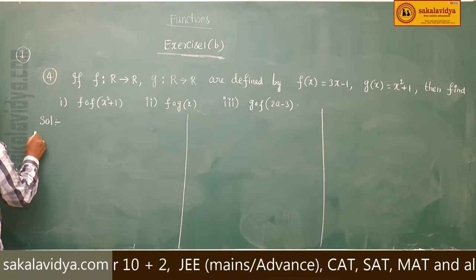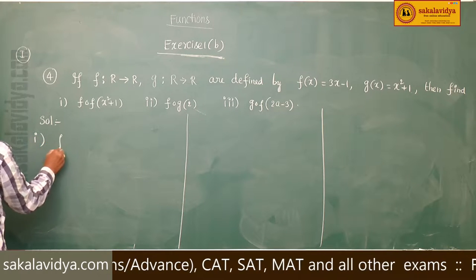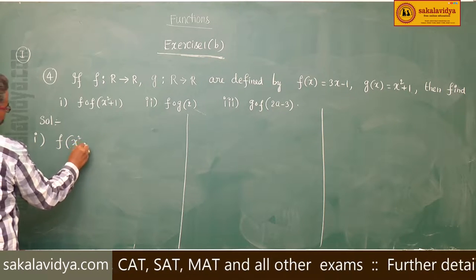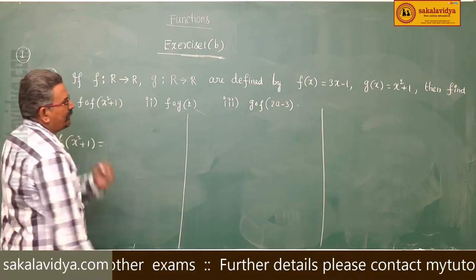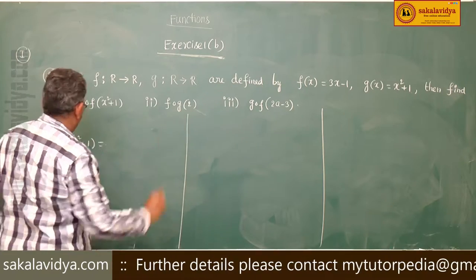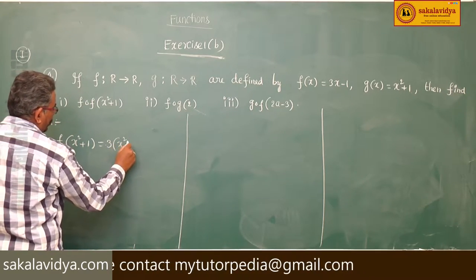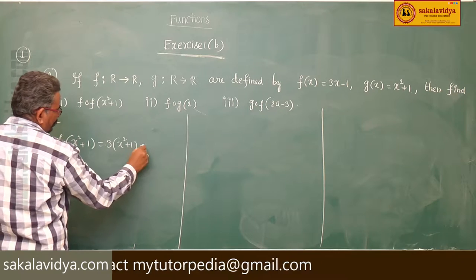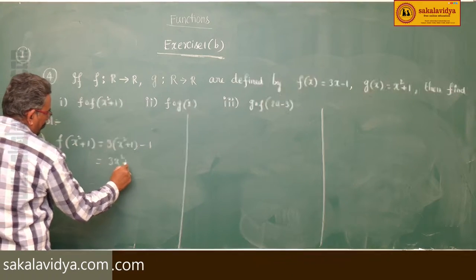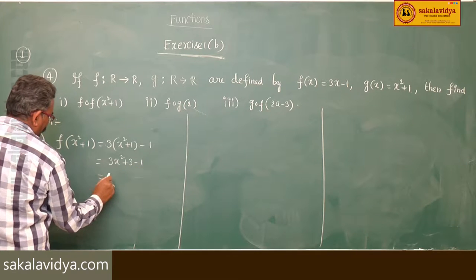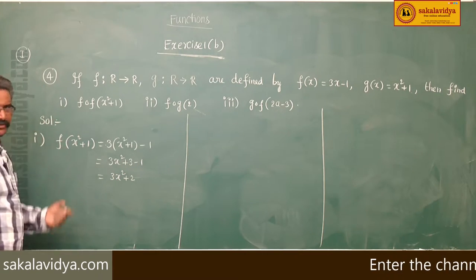First one, let us find F of x squared plus 1. Since F of x is equal to 3x minus 1, this is 3 times (x squared plus 1) minus 1. This is 3x squared plus 3 minus 1, which equals 3x squared plus 2. This is F of x squared plus 1.